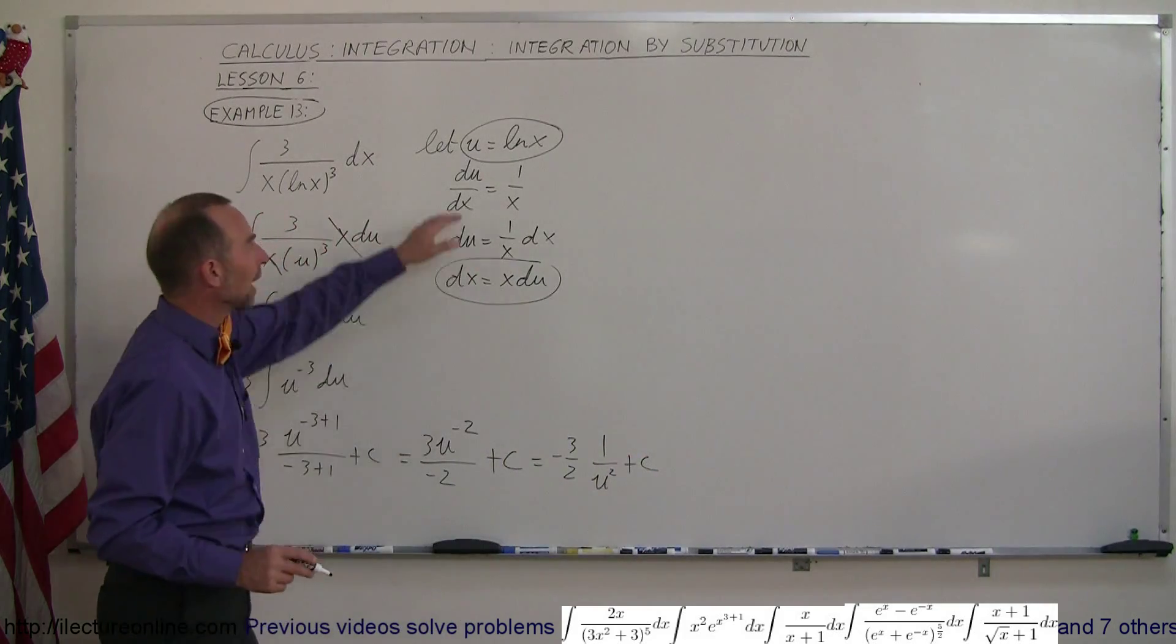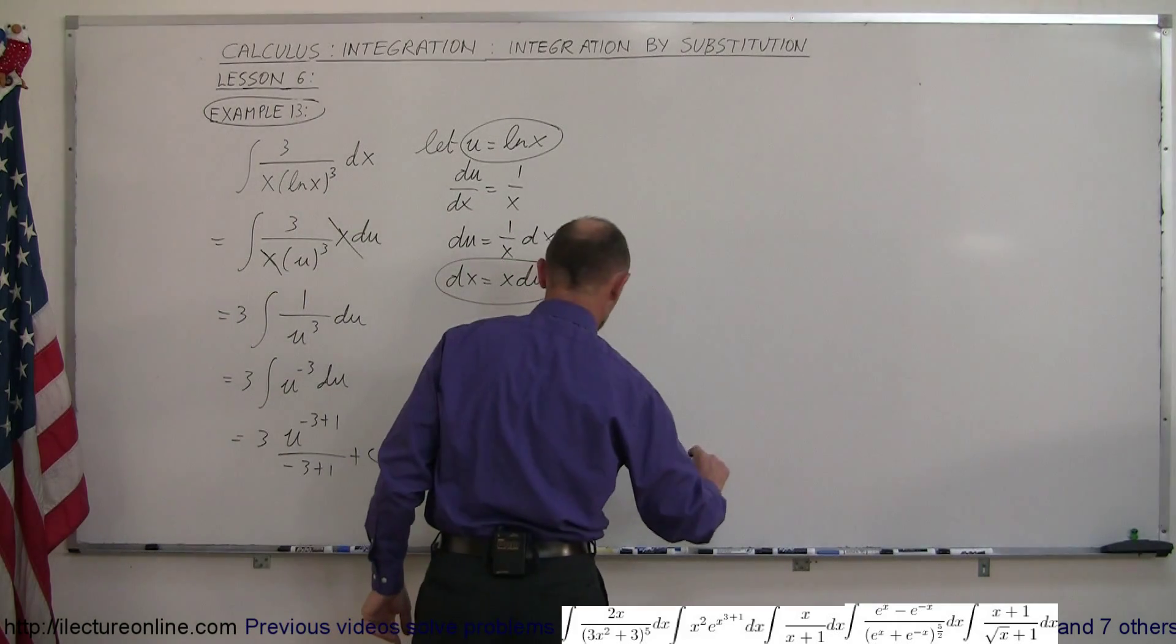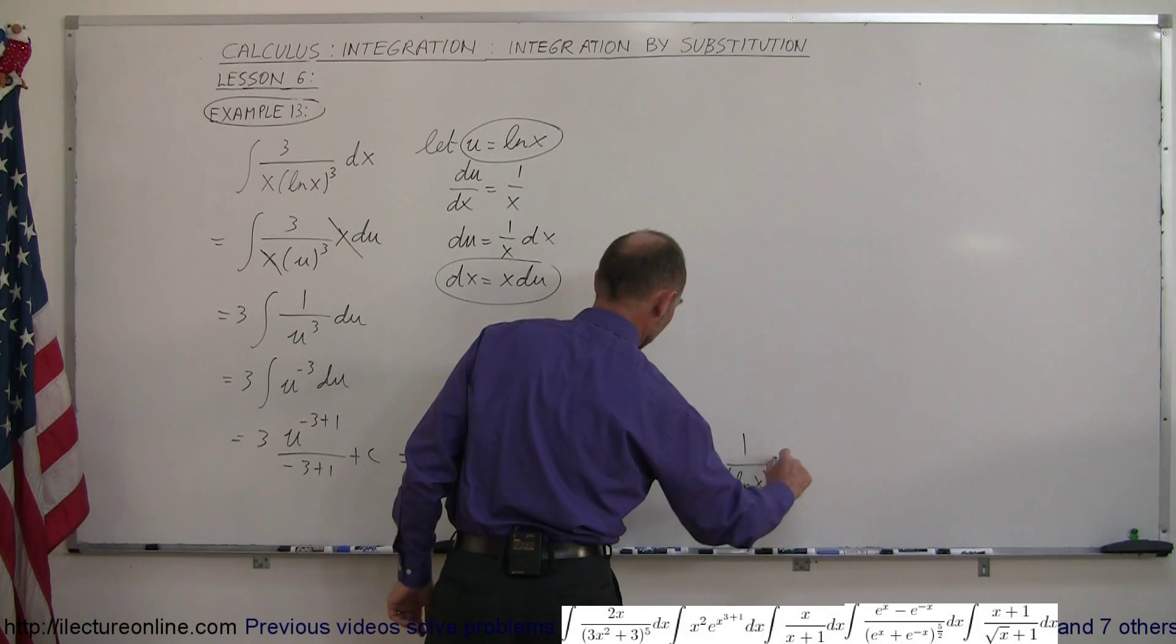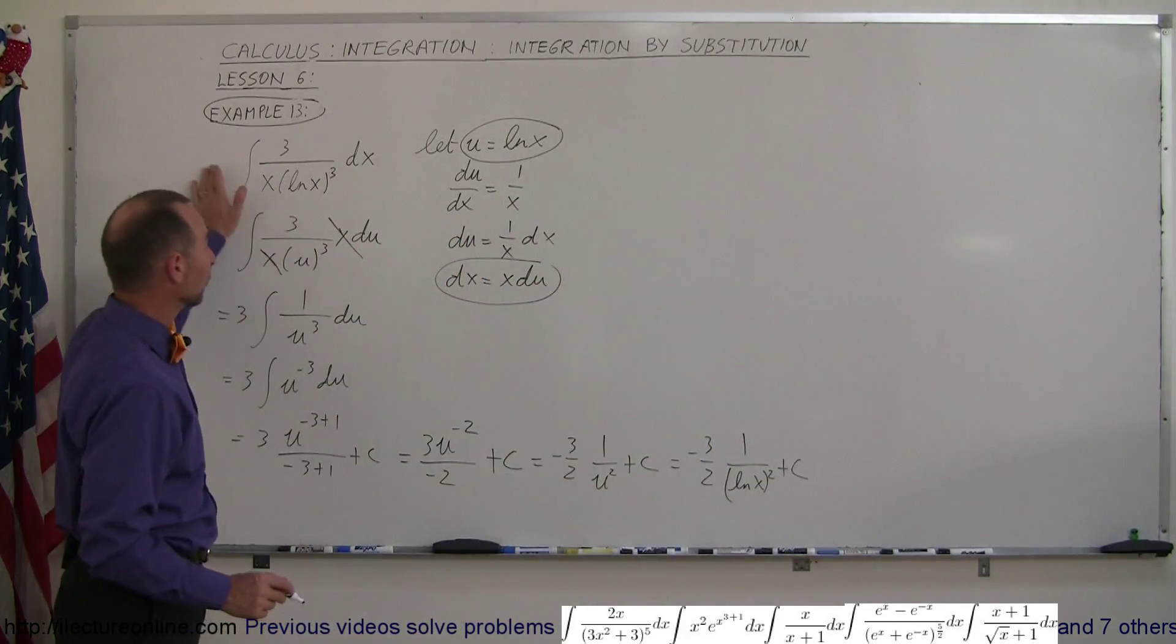And finally, substituting back in what u is equal to, right there. And so this is equal to minus 3 over 2 times 1 over the natural log of x squared plus the constant of integration. And that's the solution of this particular integral.